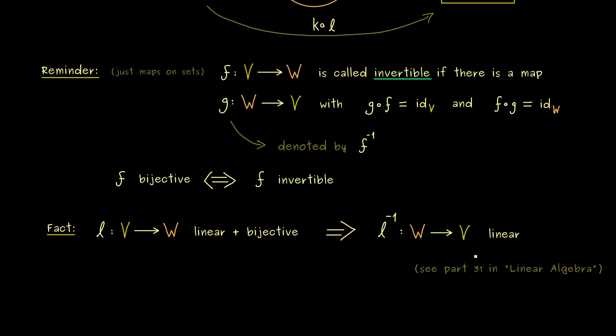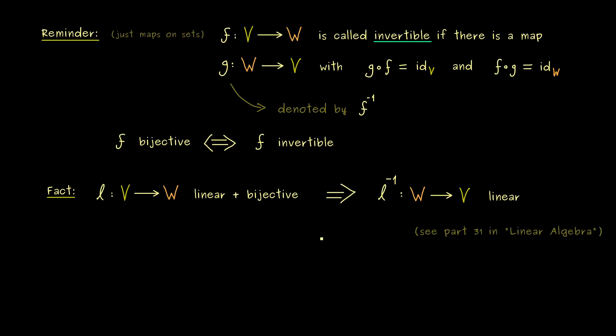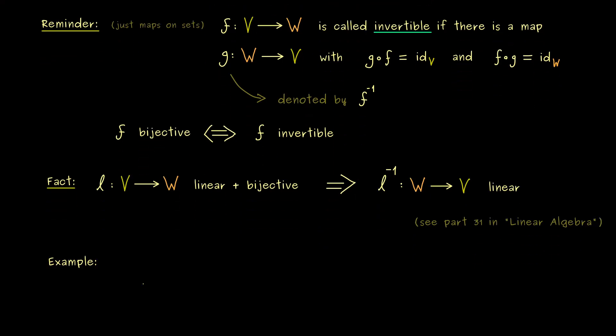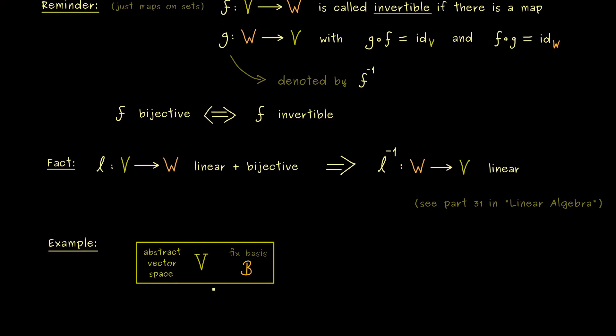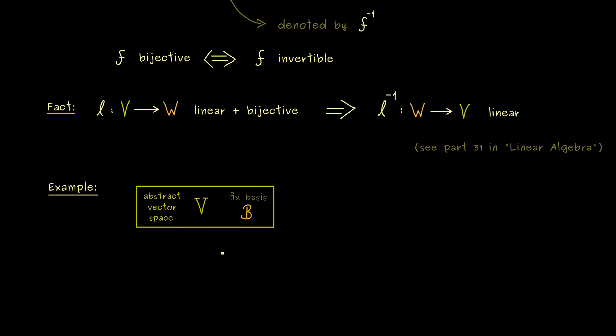With that in mind, we can immediately look at a very general and important example. And this one we already know very well, because it's about the so-called basis isomorphism. To make sense of this we just need to take a finite dimensional abstract vector space V and a fixed basis B.